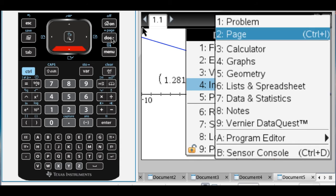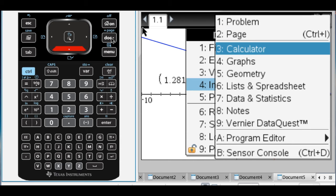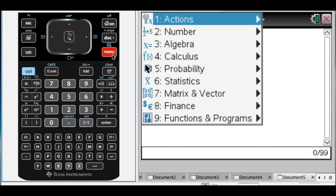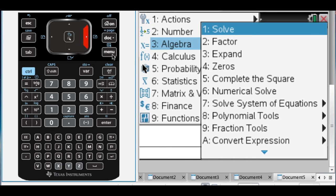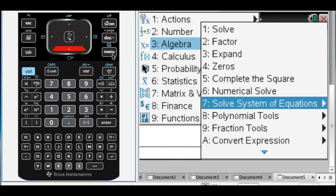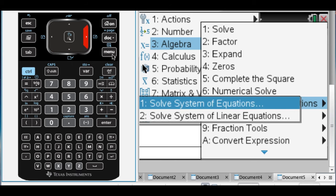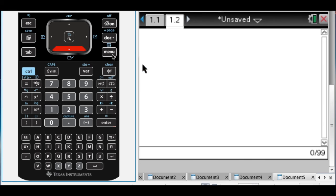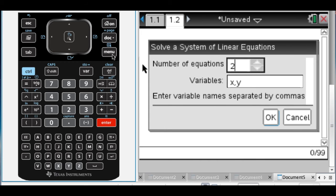So a second thing that I want to do is I'm going to hit doc and insert a calculator page. And now what I'm going to do is press menu, and go down to algebra. And if you scroll down, I have the CAS, so for me it's seven solve system of equations. And then I have solve system of linear equations, because these are linear equations. I have two equations, the variables are x and y, so I'm just going to press enter on that.